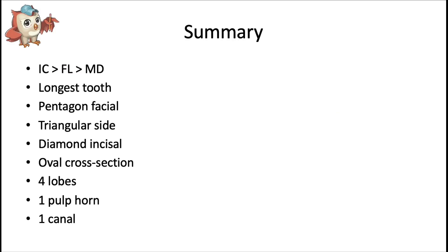In summary: the incisocervical dimension is greater than the faciolingual dimension, which is greater than the mesiodistal dimension. It's the longest tooth in the entire mouth. It has a pentagonal facial view, triangular side view, diamond incisal view, and oval cross-section. It consists of four lobes, one pulp horn, and one canal.